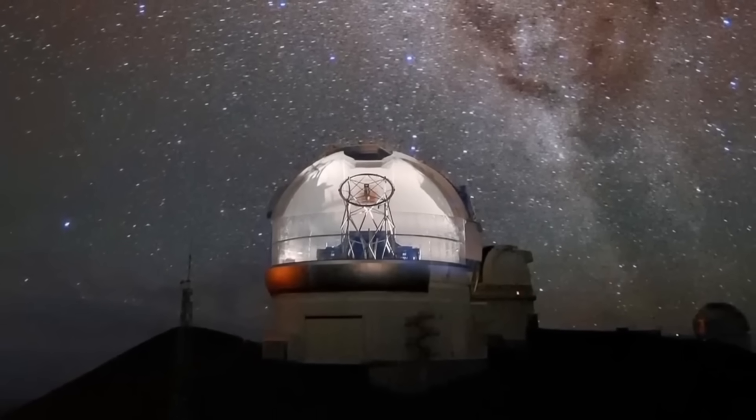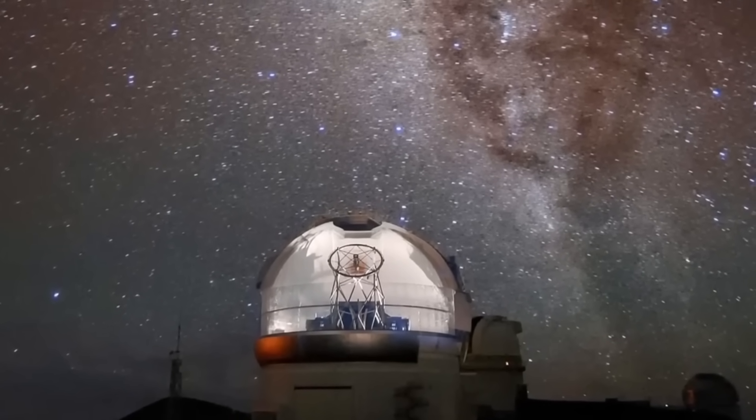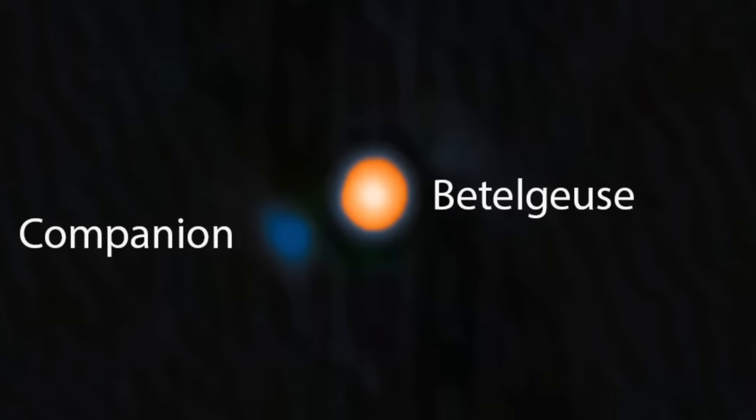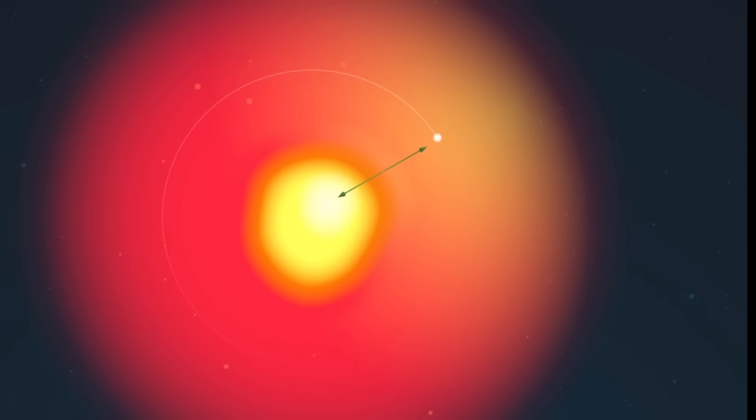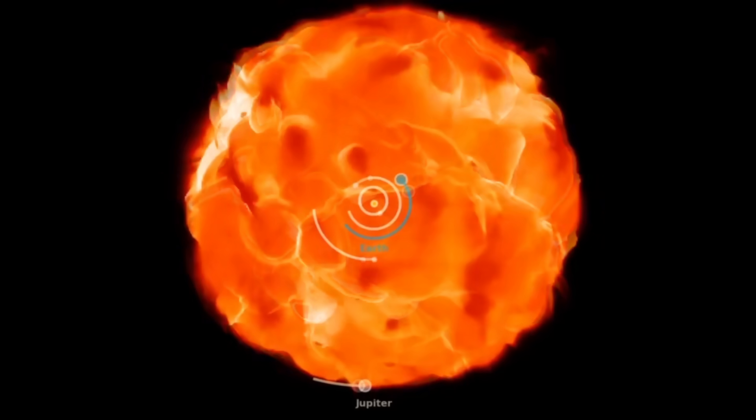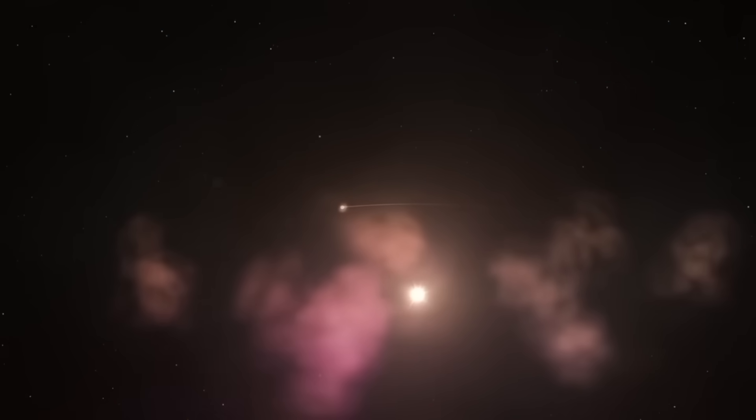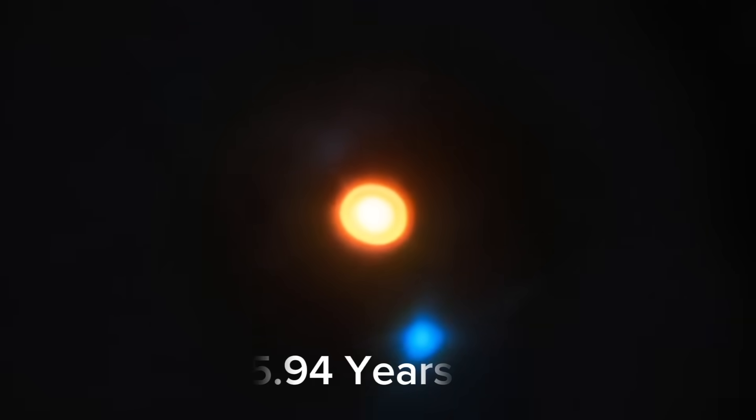But there was a problem. Betelgeuse is so huge and bright that spotting a much smaller, dimmer star right next to it is extremely difficult. However, using a special instrument called Allopiki attached to the powerful Gemini North Telescope in Hawaii, scientists were finally able to spot something extraordinary. They directly observed a faint companion star near Betelgeuse. They named it Siwara. This star is about 1.6 times the mass of the sun and orbits Betelgeuse at a distance of roughly four astronomical units. That's four times the distance between Earth and the sun. In comparison, Jupiter orbits the sun at about 5.2 AU, so Siwara is even closer to Betelgeuse than Jupiter is to our sun. Based on its orbit, scientists found that Siwara circles around Betelgeuse once every 5.94 years, which lines up almost perfectly with the strange six-year light fluctuations observed earlier.